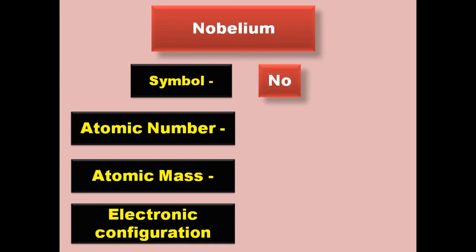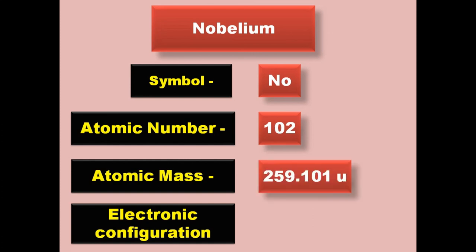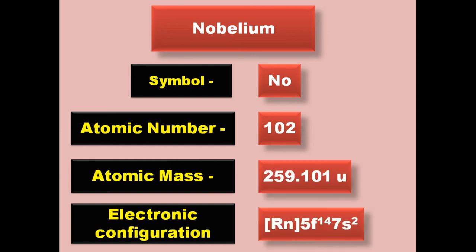Nobelium has symbol No, atomic number 102, atomic mass 259.101, electronic configuration [Rn] 5f14 7s2. Nobelium is an actinide and exists in solid form at room temperature.